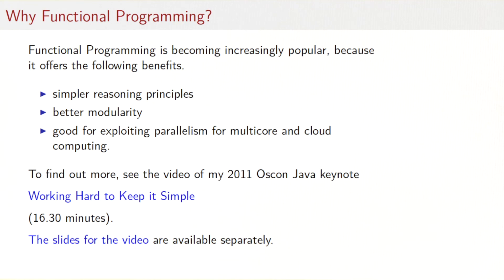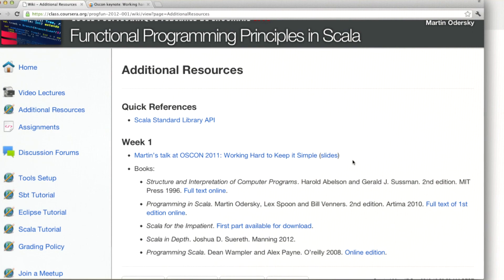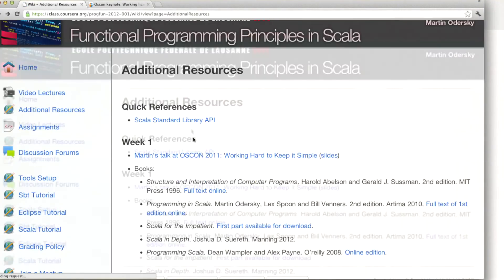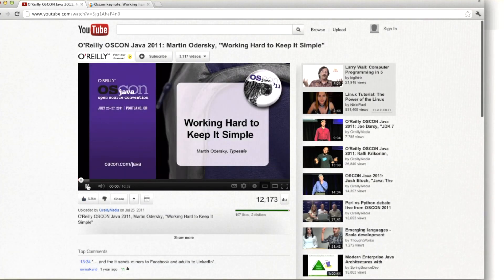Now I've given you a quick introduction to functional programming and why it matters. I've stressed that there are simpler reasoning principles and better modularity. But there's actually a third reason why functional programming is becoming increasingly popular, and that's because it's very good for exploiting parallelism on multi-core and cloud computing. To find out more about this third aspect, there's actually a video that I gave last year at the OSCON Java conference. The video is called Working Hard to Keep It Simple. You get that also from the site. I recommend that you go now to that talk to find out a little bit more about Scala, what its role is, what its purpose is, and why functional programming is important for parallelism and concurrency. After you've done that, you can come to the next lecture where we are going to do some Scala programming.